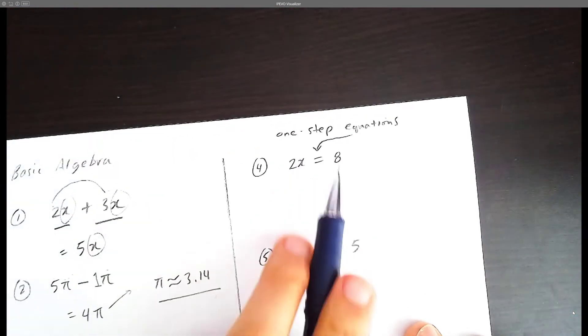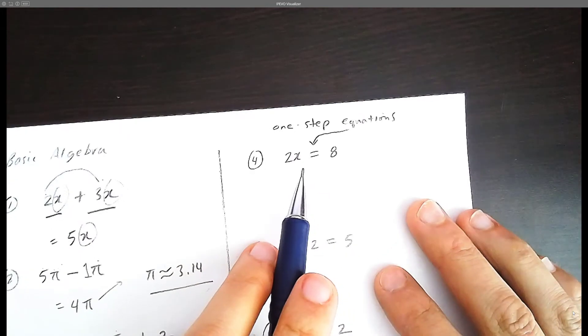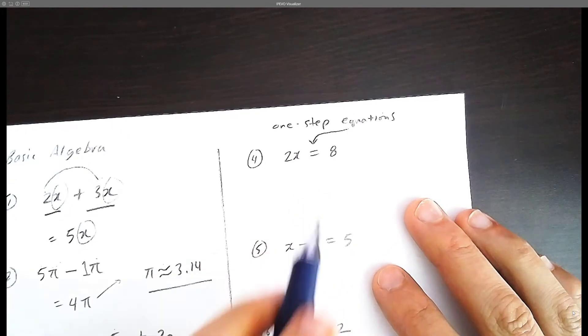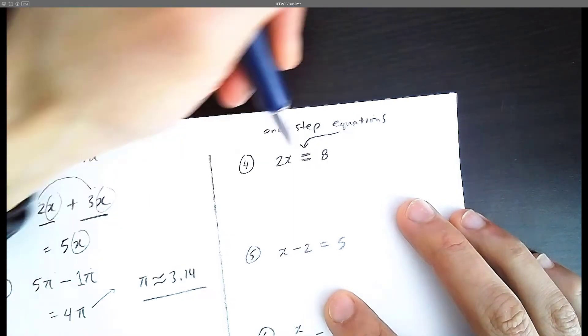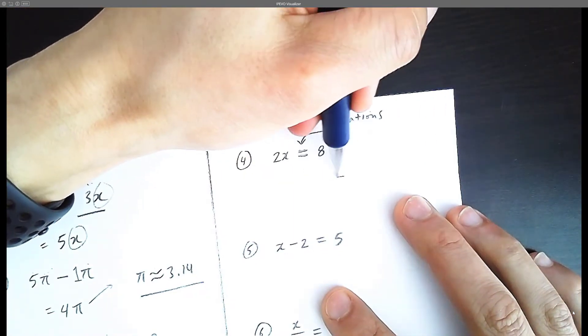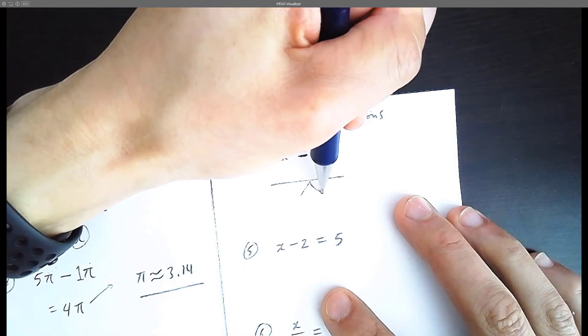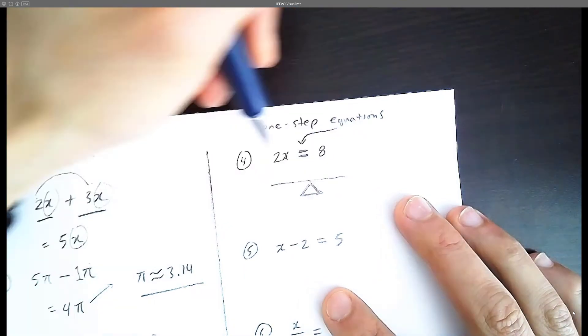So the idea of one-step equations is we're just easing into how equations work. Think of equations as an equal sign being like a fair seesaw, like a balance. It's like you're a judge who is fair.